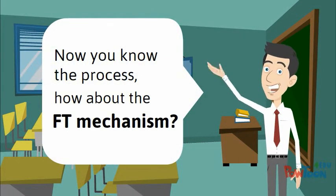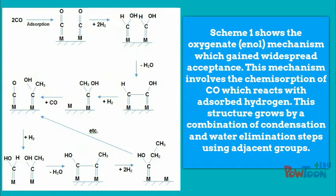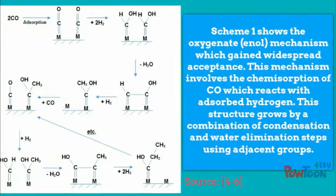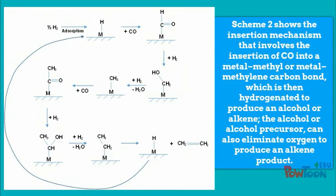How about the Fischer-Tropsch mechanism? Scheme 1 shows the oxygenate enol mechanism, which gained widespread acceptance. This mechanism involves the chemisorption of CO, which reacts with adsorbed hydrogen. This structure grows by a combination of condensation and water elimination steps using adjacent groups. Scheme 2 shows the insertion mechanism, involving the insertion of CO into a metal-methyl or metal-methylene carbon bond, which is then hydrogenated to produce an alcohol or alkene. The alcohol or alcohol precursor can also eliminate oxygen to produce an alkene product.